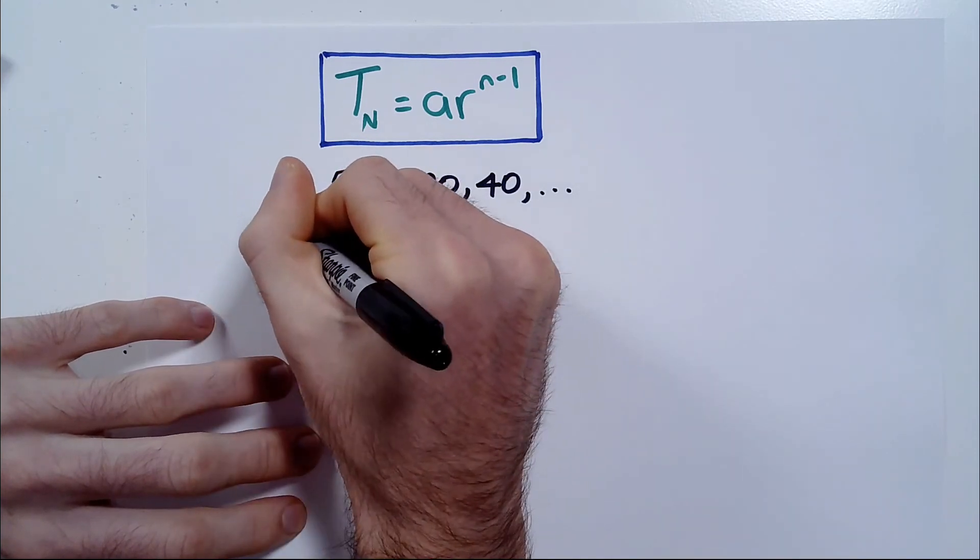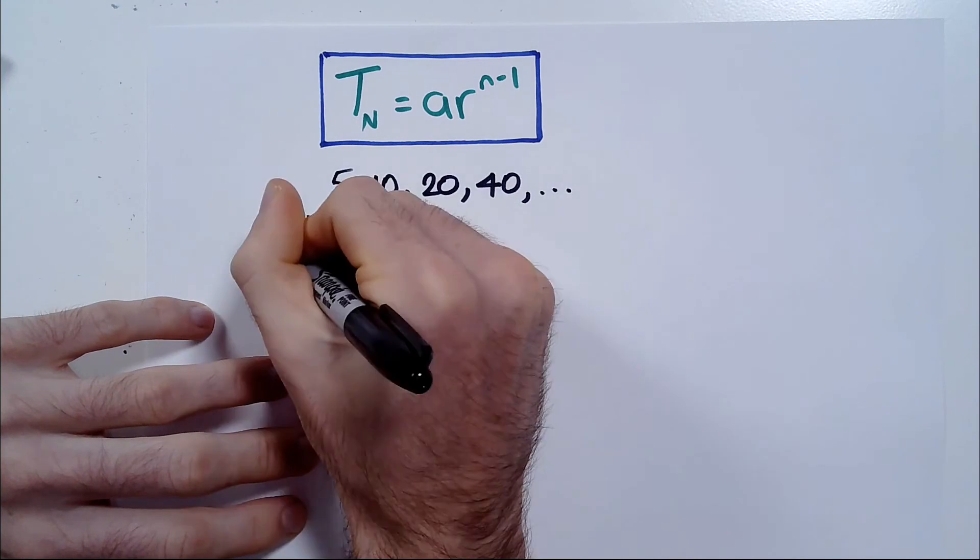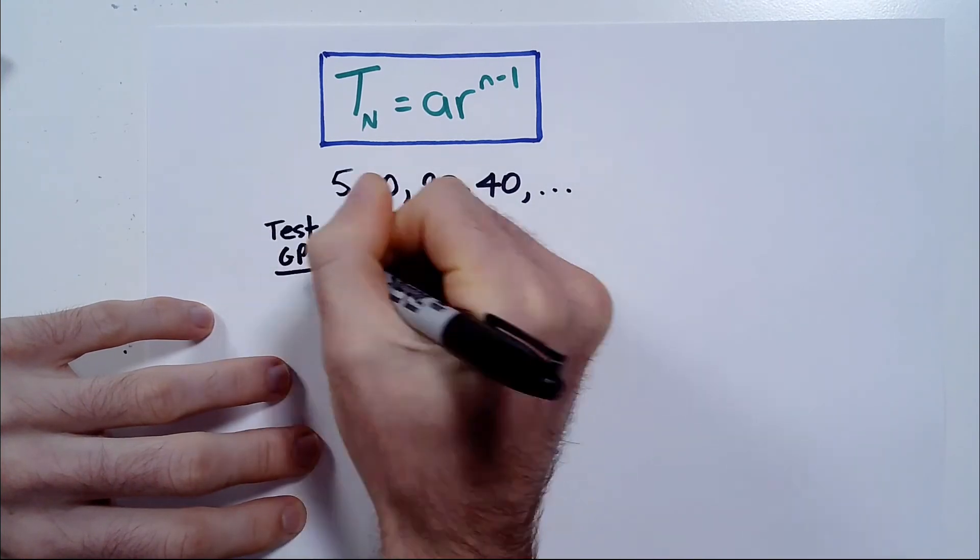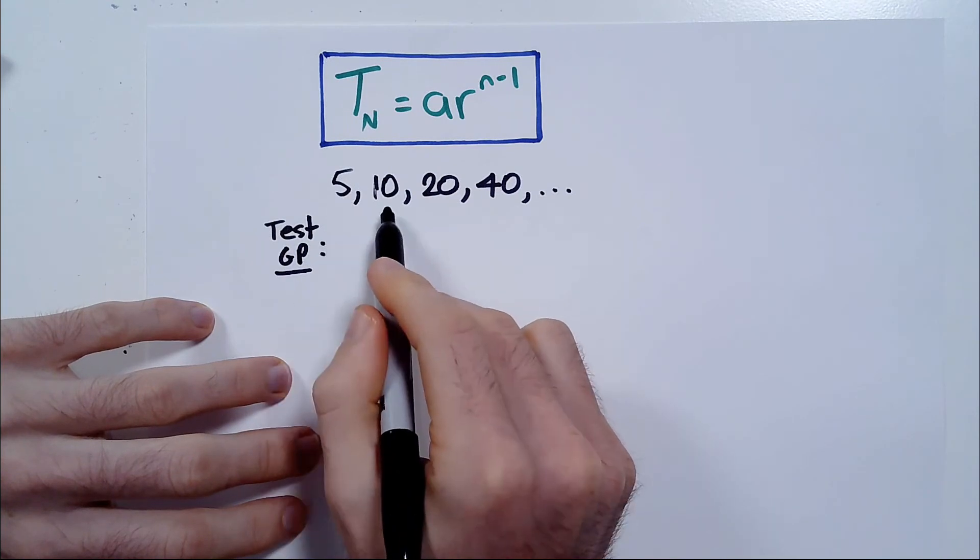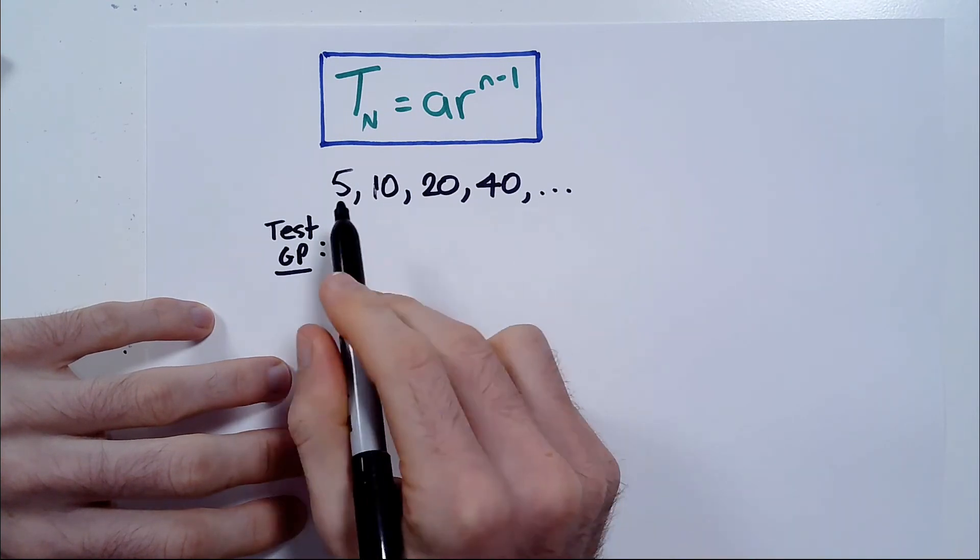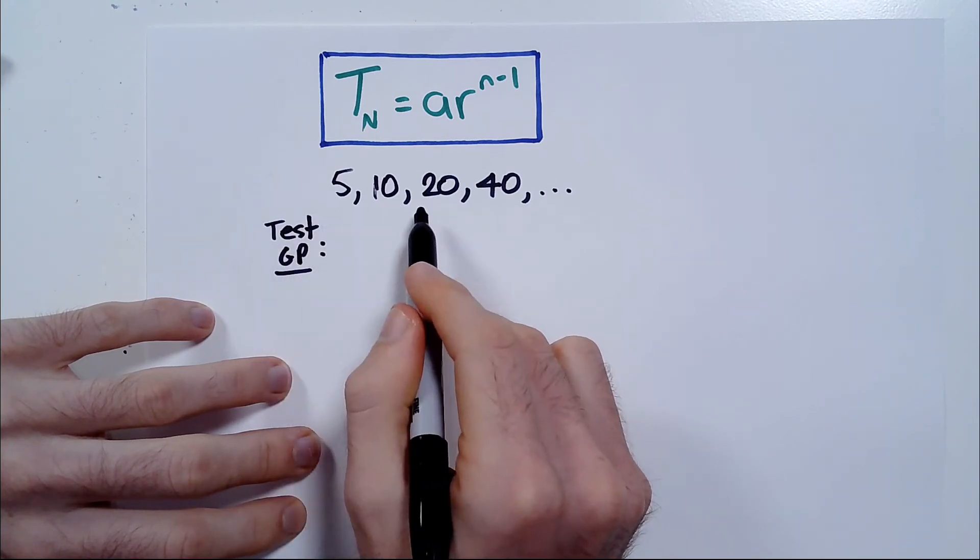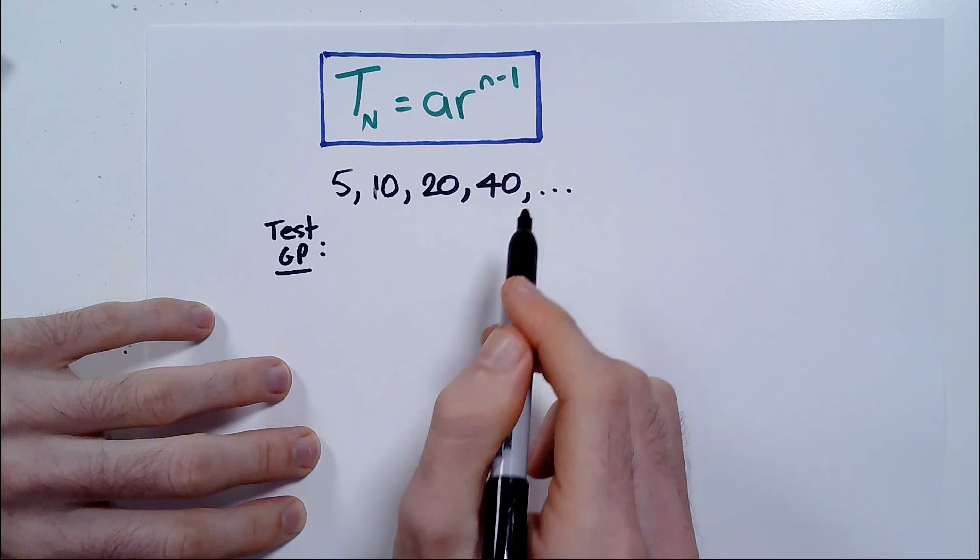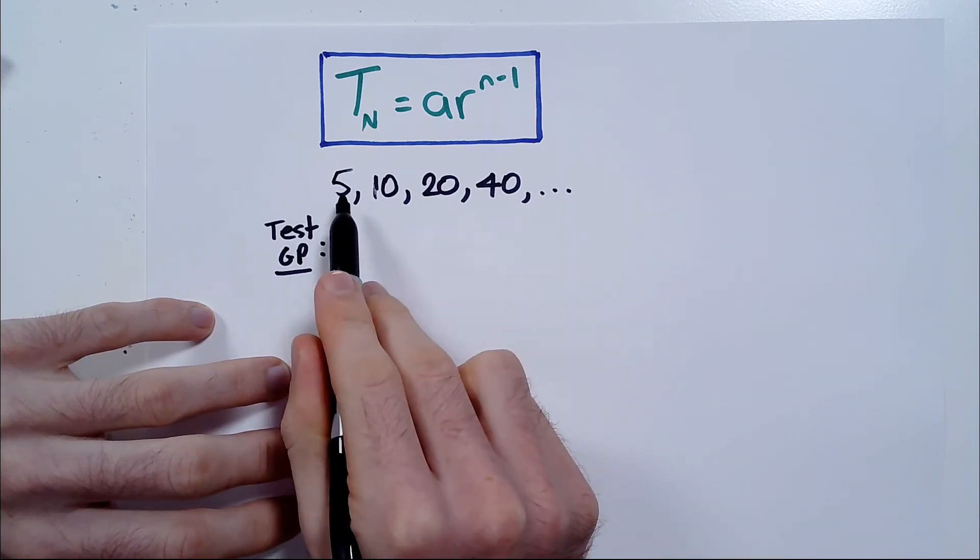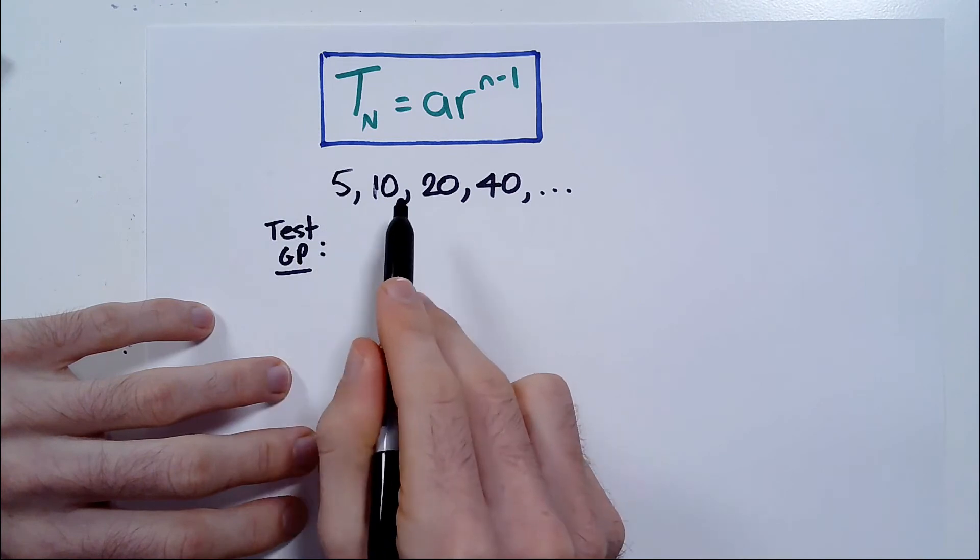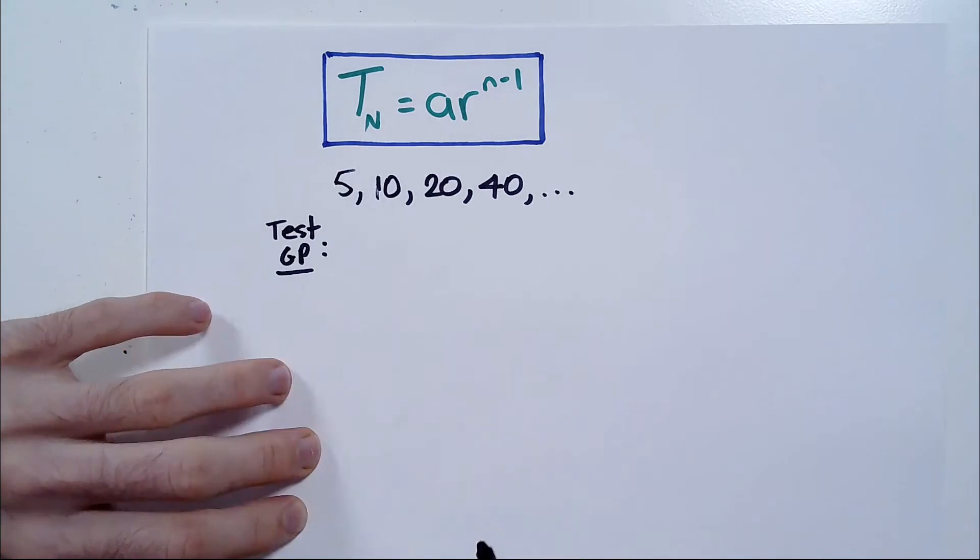Okay, so the first thing we'll do before we go into how to find any term in a GP is to quickly remind ourselves of how to know whether it is in fact a GP. So we know we've got this kind of pattern, we can probably tell intuitively there is some pattern, there is some consistency in terms of how we're going from one term to another in this chain of numbers. 5 to 10 to 20 to 40. What's going on? Well, we can see that what is happening to get from 5 to 10, 10 to 20, 20 to 40 is we're multiplying by 2.